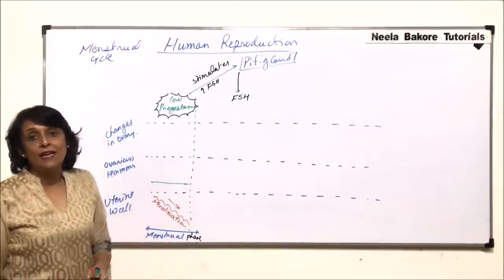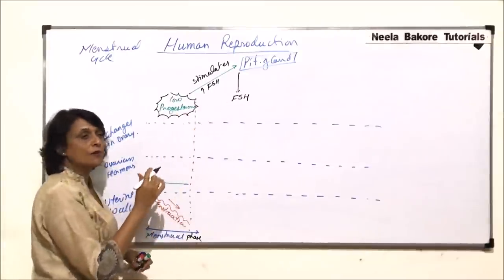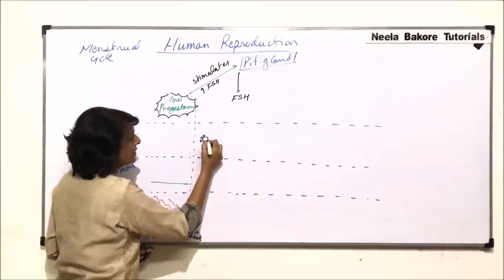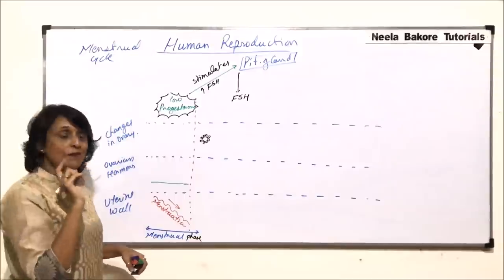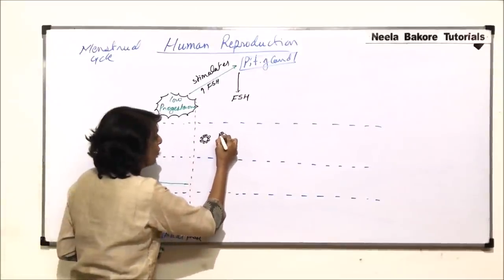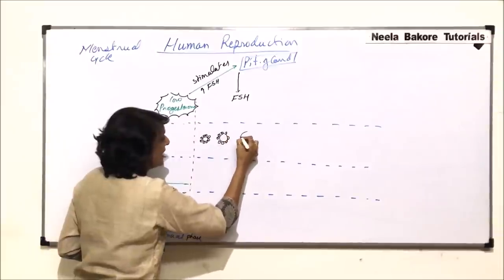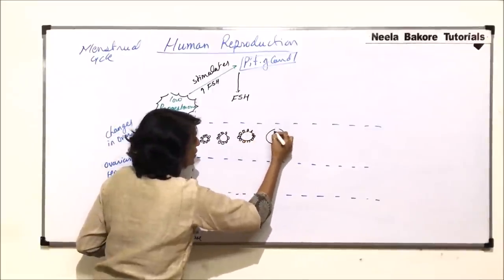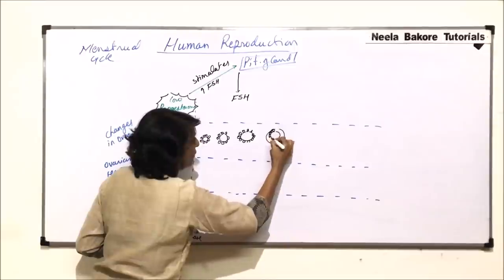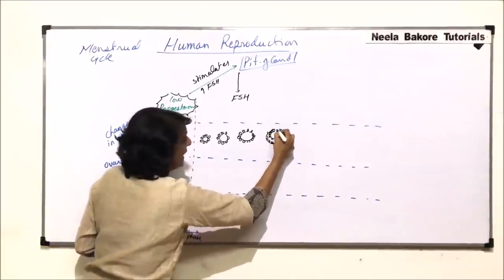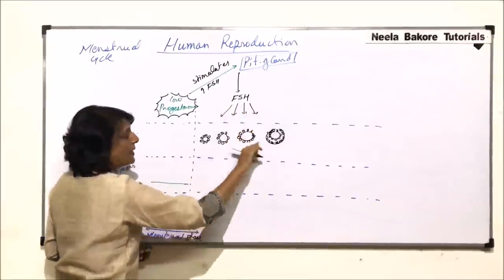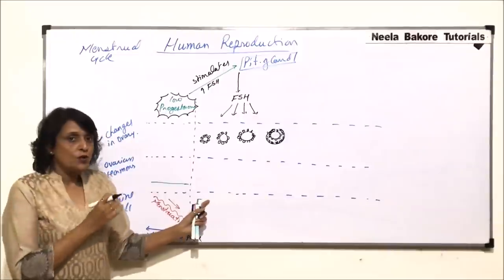FSH is follicle stimulating hormone. When FSH is produced, in the ovary the follicle clusters are present, and out of these one primary follicle starts to grow — it becomes bigger and bigger, and finally changes into the Graafian follicle. So here we have this Graafian follicle forming under the influence of FSH.